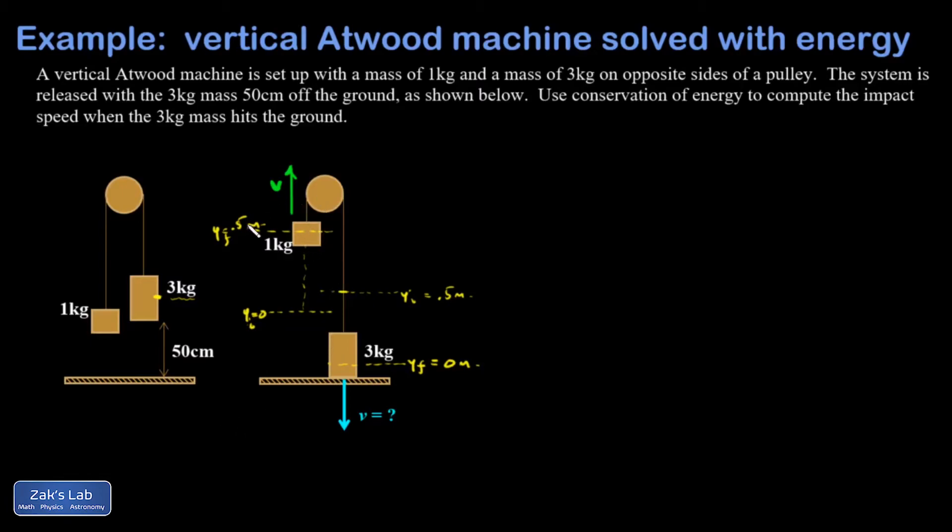And then of course, each of these has a kinetic energy of one half m v final squared. And their initial kinetic energy was zero because it started from rest. Which hopefully I remembered to say in the problem. I probably forgot. But if I forget, then you can assume it starts from rest.